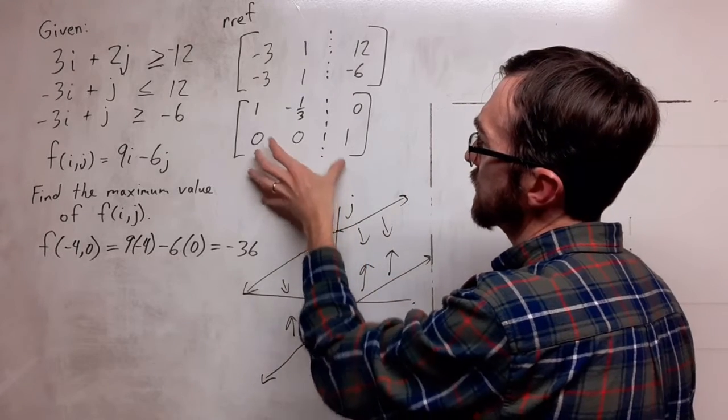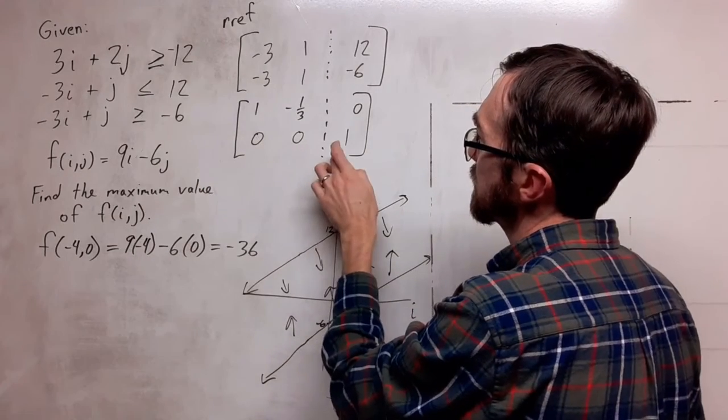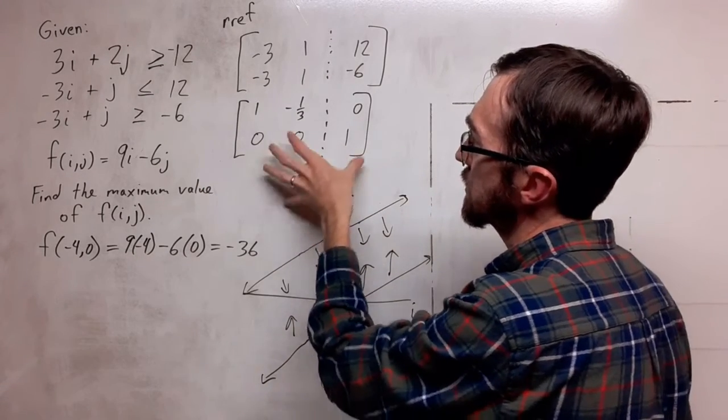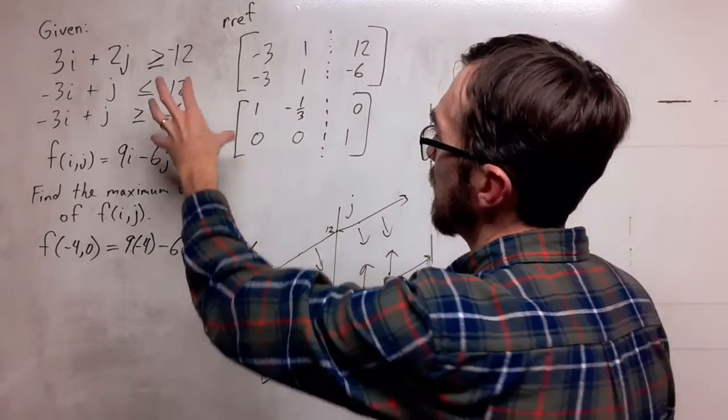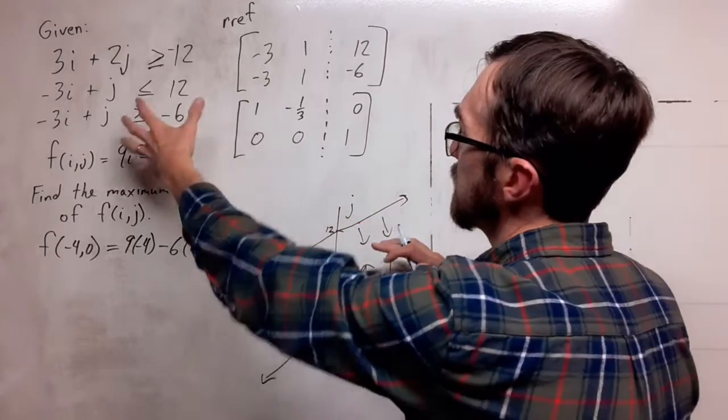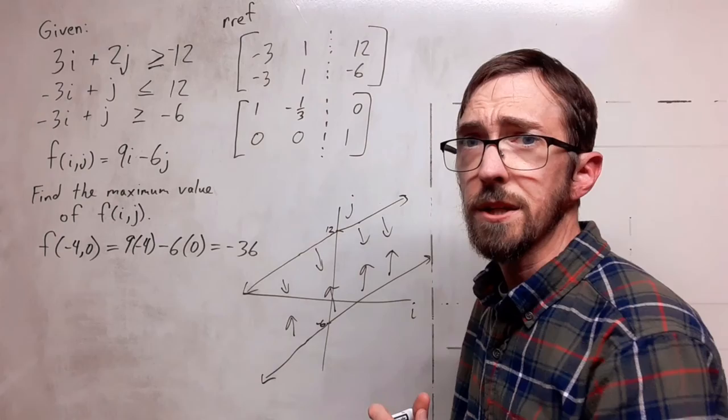So no intersection here. As we would interpret this with an equality, 0 plus 0 equals 1 is not true. There is no solution for this as an equality. And when we look at the inequality, we see that we have a feasible region with no intersection.